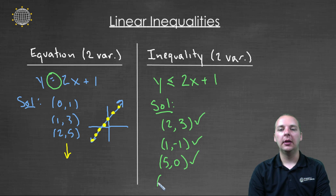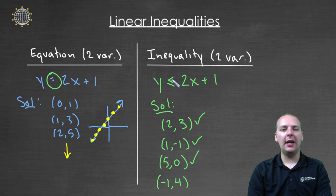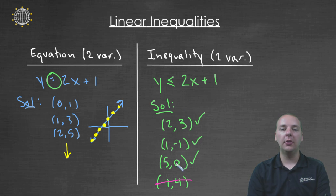And the last one — bear with me — negative one comma four. Two times negative one is negative two, and negative two plus one makes negative one. Four is not less than negative one, so something's wrong with this last one. I need to mark it out. So as with equations, some ordered pairs make the inequality true and others don't.